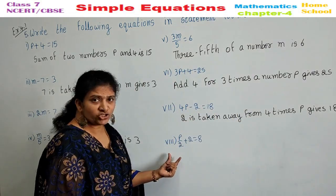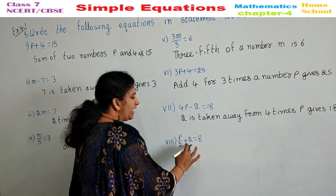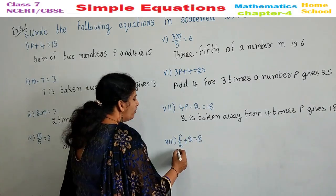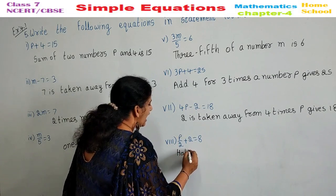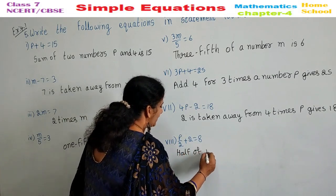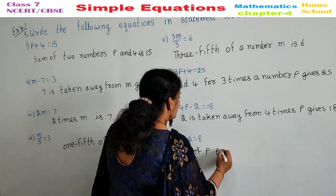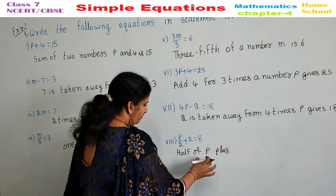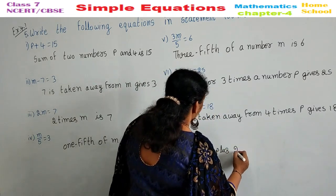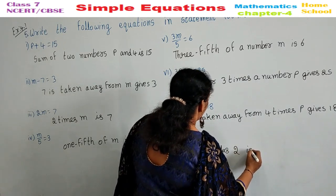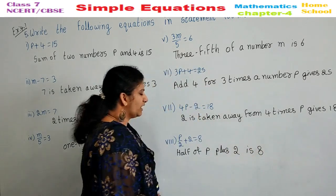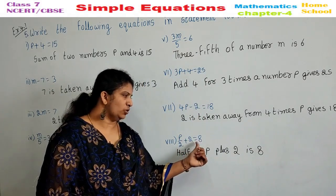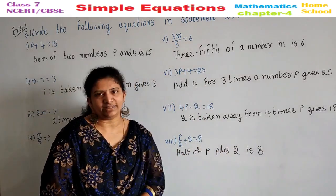Last sub-question in this main: P by 2 plus 2 is equal to 8. Half of P plus 2 is 8.